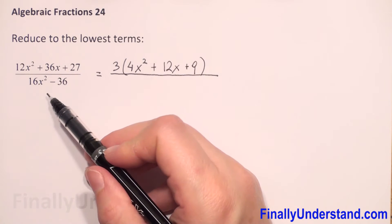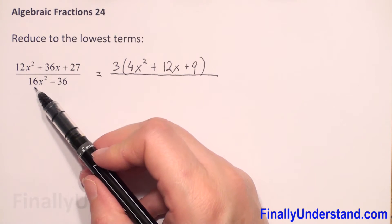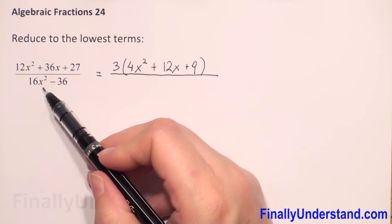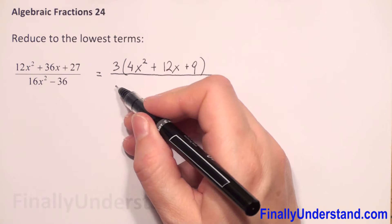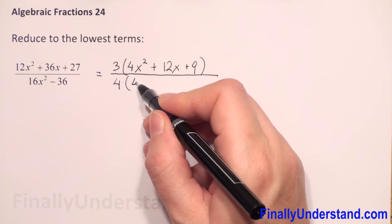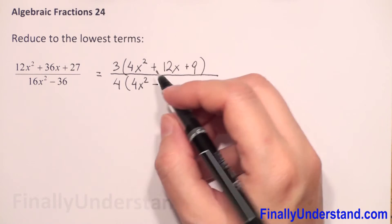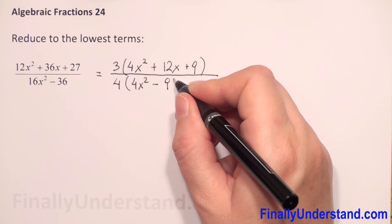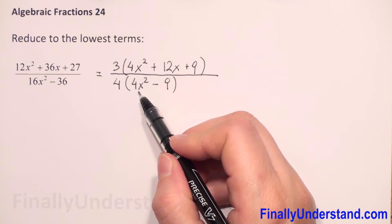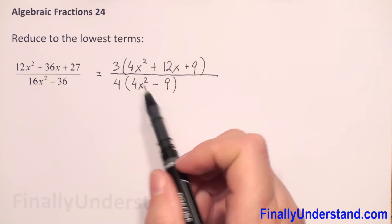And our denominator — what we can do here. We have 16 and 36, so we can factor out 4. In parentheses we will have 4x² minus 36 divided by 4 is 9. If you multiply 4 by 4x² you get 16x², and 4 times negative 9 is negative 36.